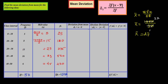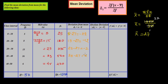Now we compute (x minus x̄) for each mid value by subtracting 27: 5−27=−22, 15−27=−12, 25−27=−2, 35−27=8, and 45−27=18. These are the deviations from the mean for each class.